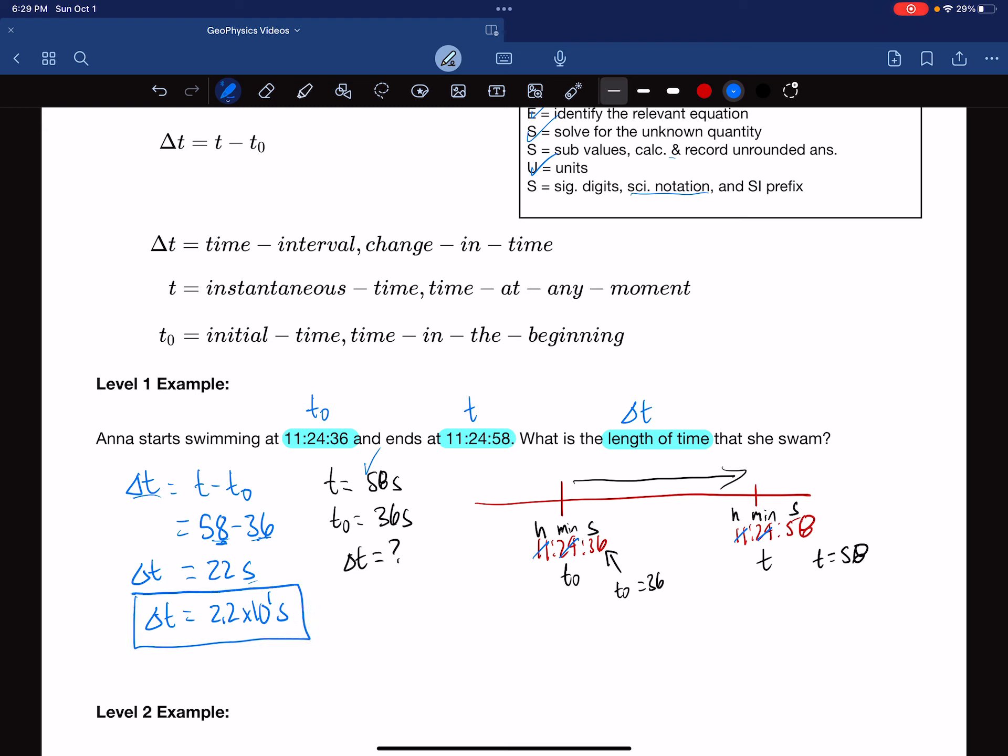And again, remember, the reason we're converting it to scientific notation is, number one, practice, and number two, it makes it easy for us to then convert it into other metric prefixes. And so that, then, is our level one example.